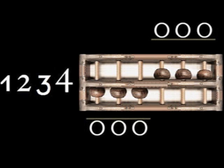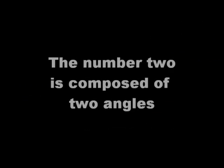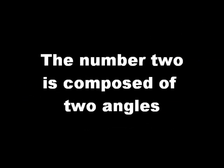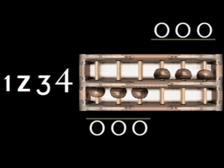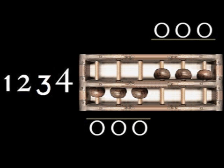The number 1 is composed of 1 angle. This is the handwriting of the number 1. The number 2 is composed of 2 angles. This is the handwriting of the number 2.